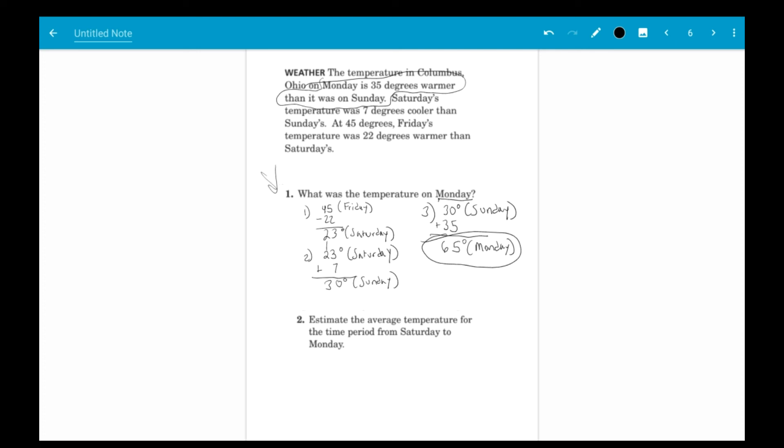So that was problem number one. Now, problem number two, I'm going to leave you guys to do on your own. I will walk you through just a little bit on how to set it up. And then you can solve the problem on your own. So now that we did problem one, we know what every temperature was on every single day. Friday was 45 degrees. Saturday was 23 degrees. Sunday was 30 degrees. And Monday was 65 degrees.